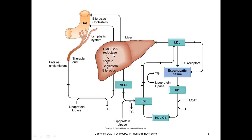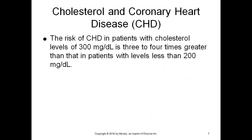HMG-CoA reductase is the major enzyme that produces cholesterol. In this lecture, we are talking about lipid-lowering agents like statins or simvastatin. Statins are basically HMG-CoA reductase inhibitors. The statin stops the activity of HMG-CoA reductase so that HMG-CoA does not form cholesterol in the body. They stop it by inhibiting HMG-CoA reductase.